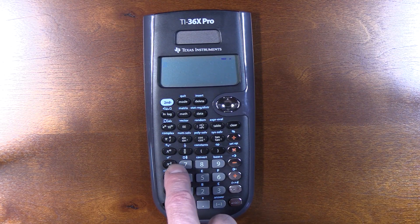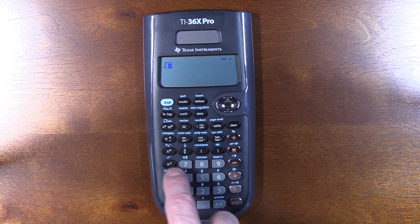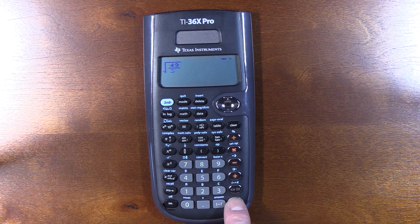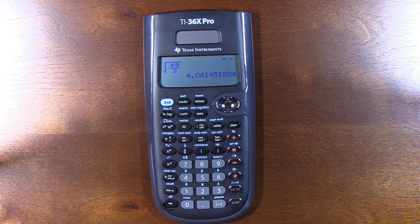Okay, let's try on this TI. Square root is a shifted function, a little less convenient, but no big deal. 49 over 3, hit enter, and it approximates.